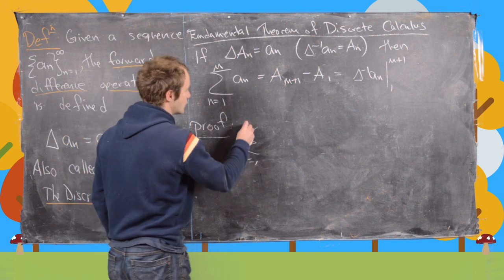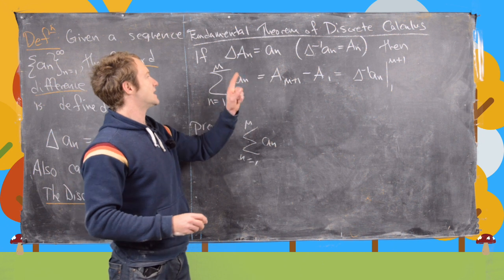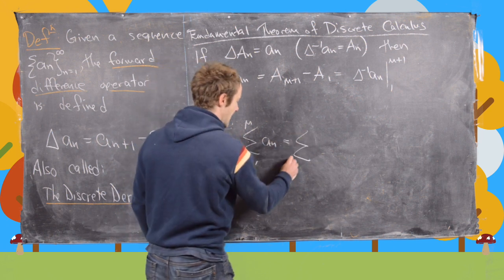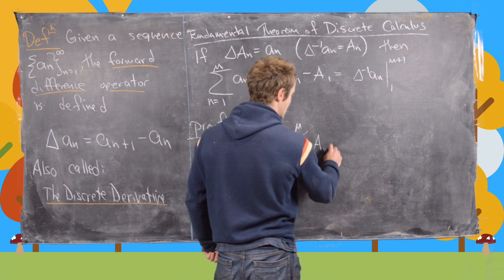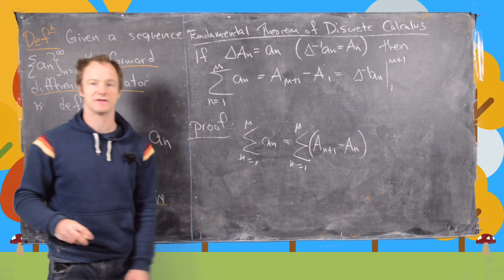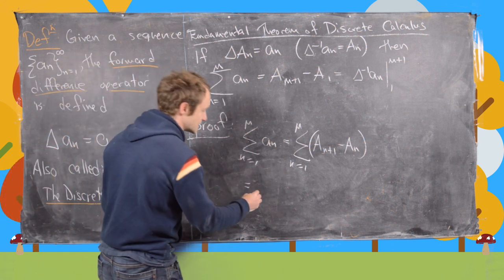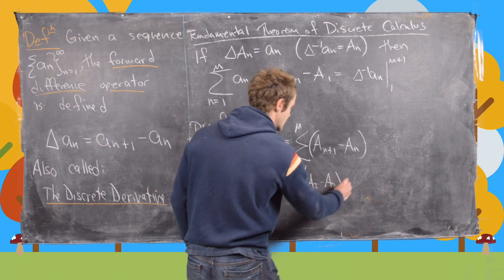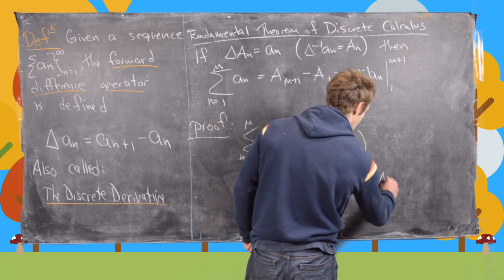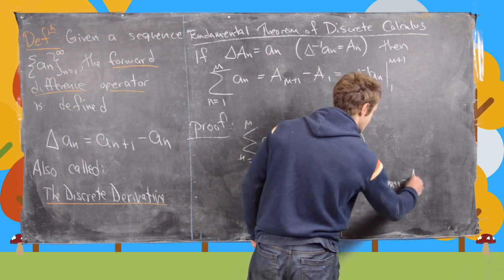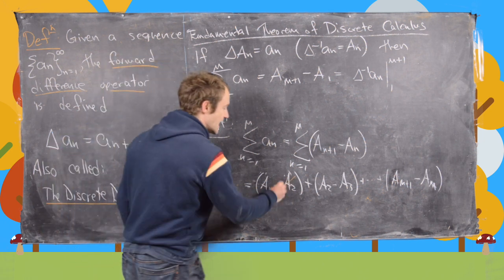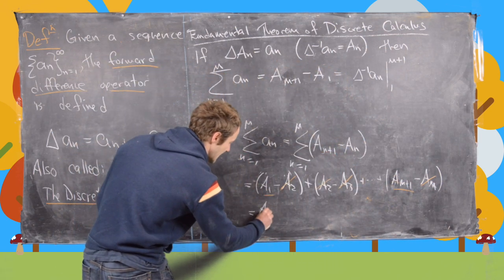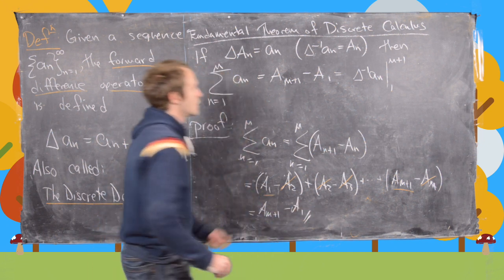The proof is simple. We write the sum of a_n as the sum of (A_{n+1} minus A_n) — the definition of the forward difference operator. Expanding: (A_2 - A_1) + (A_3 - A_2) + … + (A_{m+1} - A_m). This is a telescoping series; everything cancels except A_{m+1} minus A_1, which is exactly the result we wanted.